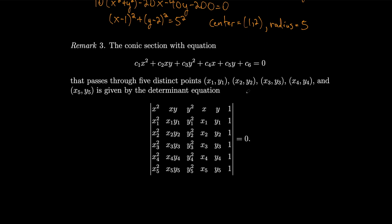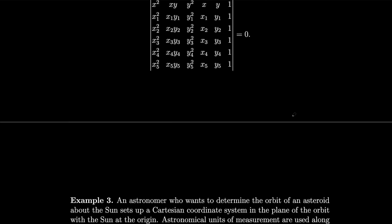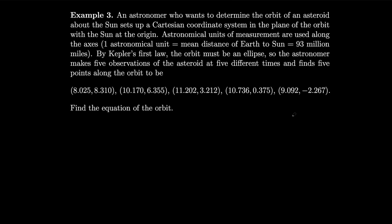The conic section that has this monster equation right over here and passes through five distinct points is given by this determinant equation. So you can see where this is going. As an example, we have an astronomer who wants to determine the orbit of an asteroid about the sun.